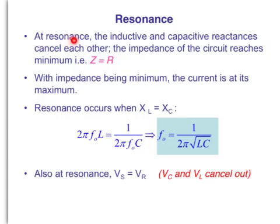At resonance, the inductive and the capacitive reactances cancel each other. The impedance of the circuit reaches minimum. The impedance is simply equal to the resistance of the resistor. With impedance being minimum, current is at its maximum.